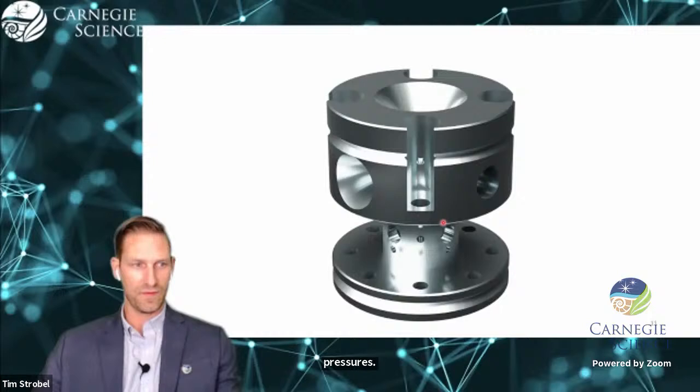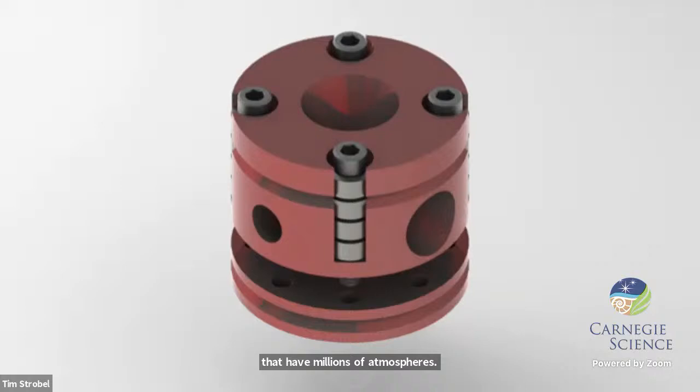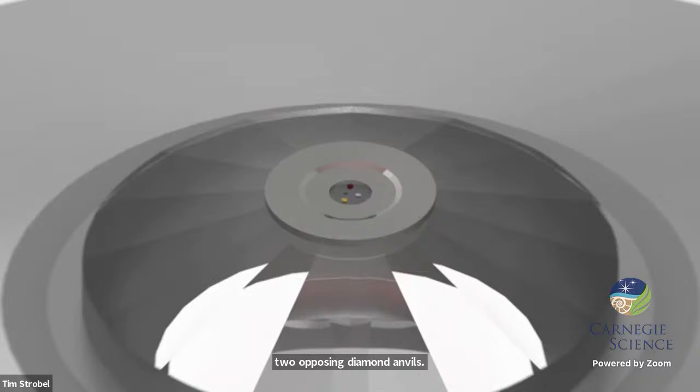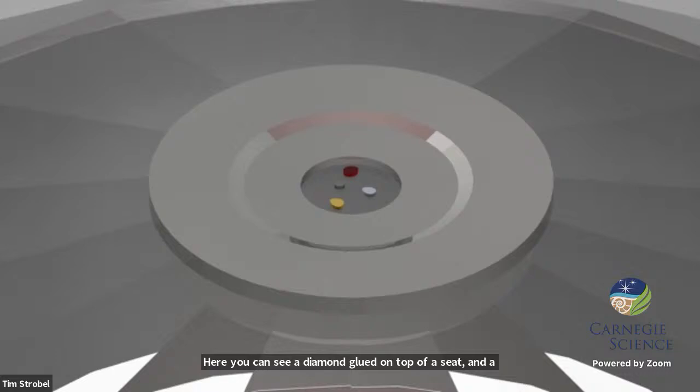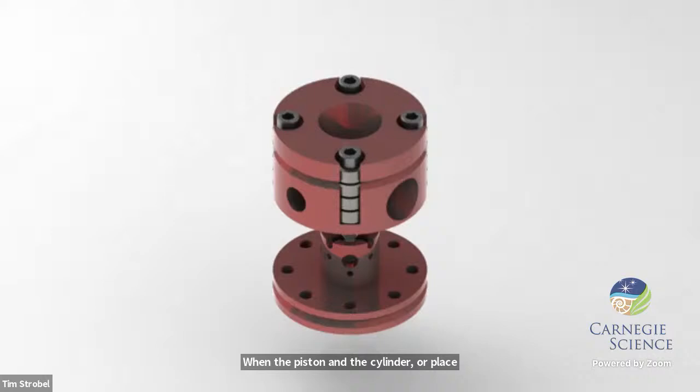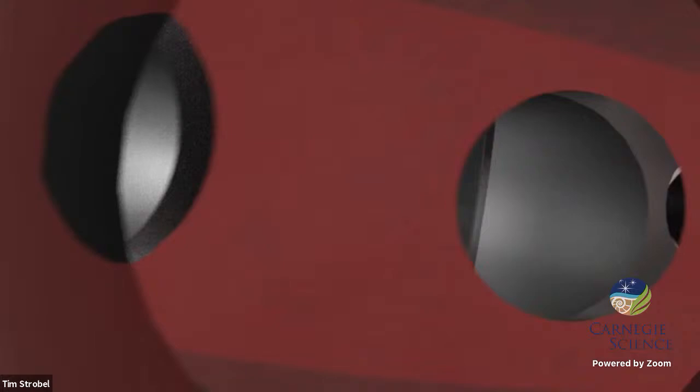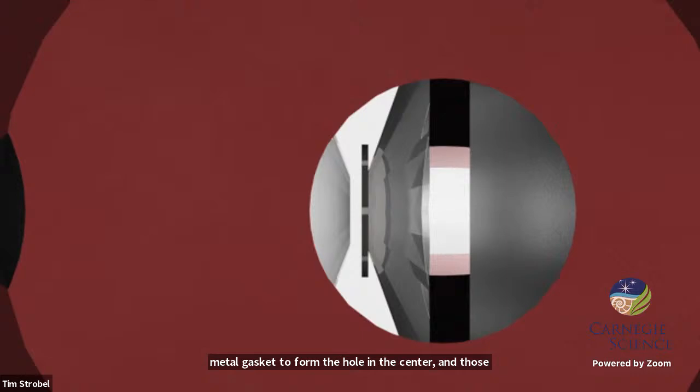The scale of pressure can be up to that of the millions of atmospheres, we use a device called a diamond anvil cell. A diamond anvil cell is a piston cylinder compression device where we have a piston and a cylinder that hold two opposing diamond anvils. Here you can see a diamond glued on top of a seat and a metallic gasket with a hole drilled in the center that contains the samples.